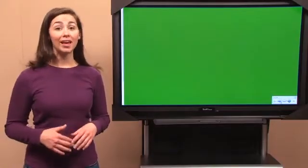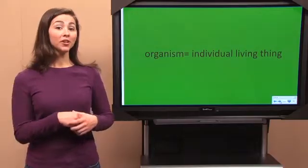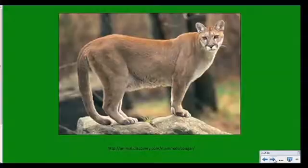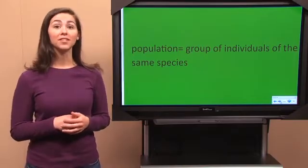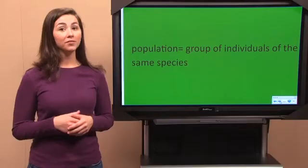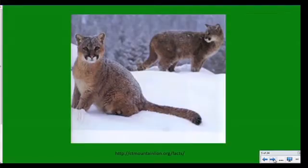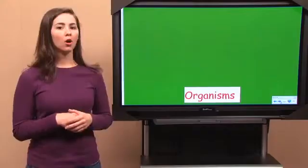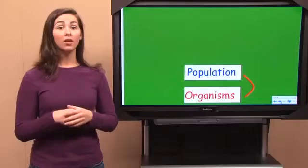First things first, there are different levels in an ecosystem. See down here, you've got your individual living his own life, doing his own thing — that's called an organism. So here's our individual cougar. Let's say his name is Connor the cougar. Connor doesn't live by himself, right? He lives with all his cougar buddies. That's called a population. A population is a group of individuals of the same species living in the same area. I'm going to write down organisms right here, and above that, population. Remember, we're going larger as we go.